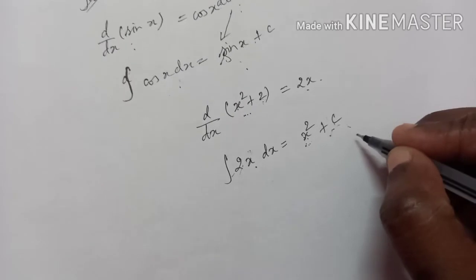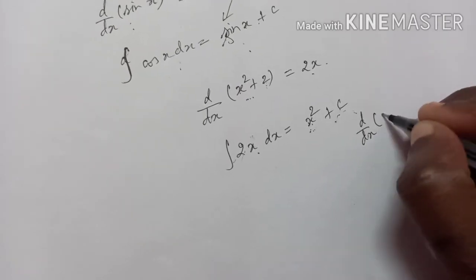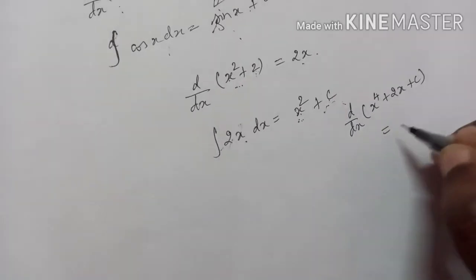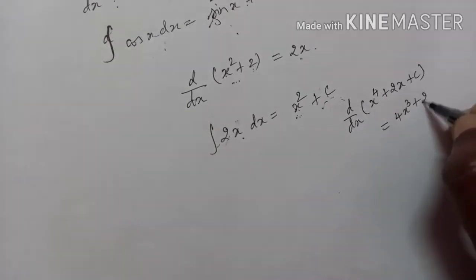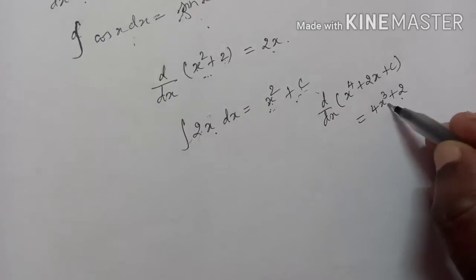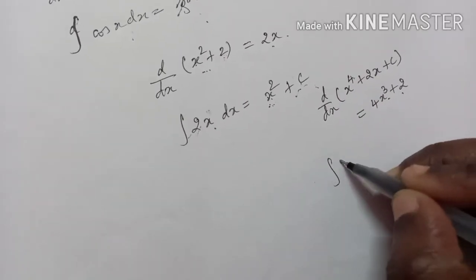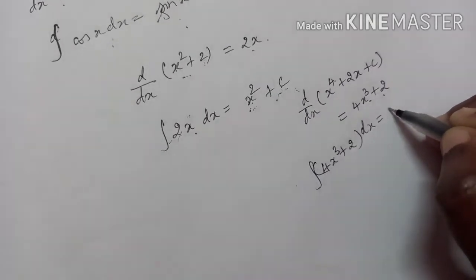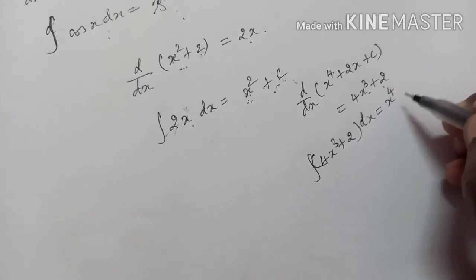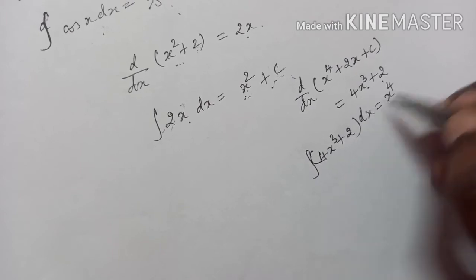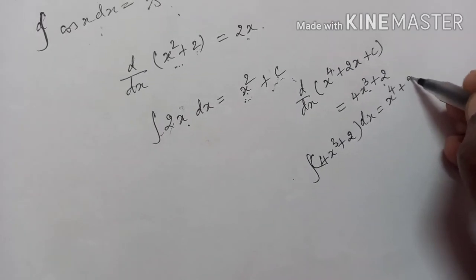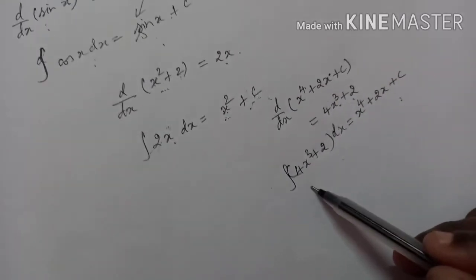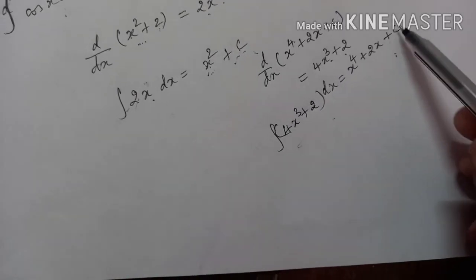Let us see another example. D by dx of x to the power 4 plus 2x plus C. If you differentiate it, you will get 4x cubed plus 2. When you integrate it, you should get back the original. The integral of 4x cubed plus 2 dx: the integration of x cubed is x to the power 4 by 4, and 4 and 4 get cancelled. The integration of 2 dx is 2x plus constant of integration C. This is why we add the constant of integration C.